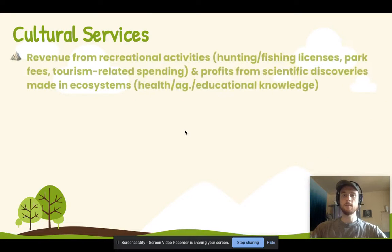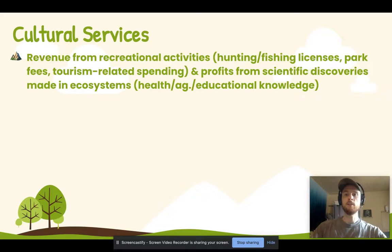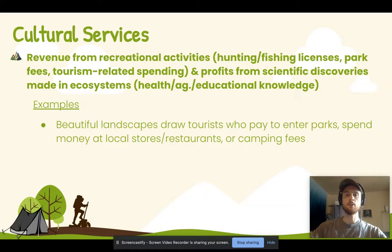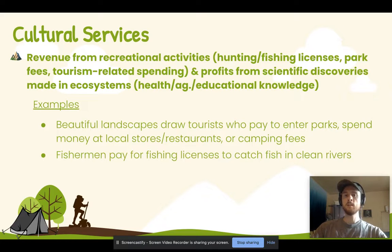Cultural services include revenue from recreational activities such as hunting or fishing licenses, entrance fees at national parks, and tourism money that flows into local economies when tourists stay in hotels and buy food at restaurants. It also includes profits generated by scientific discoveries in natural spaces — things that advance scientific knowledge, lead to new treatments for diseases, or new agricultural techniques. For instance, an intact healthy natural ecosystem draws tourists who pay park fees and spend money locally, and fishermen willing to pay for fishing licenses — but only if waters are clean and providing healthy fish.